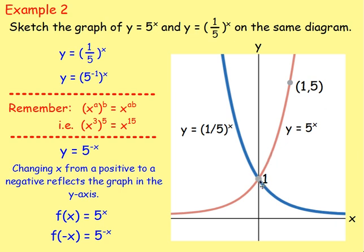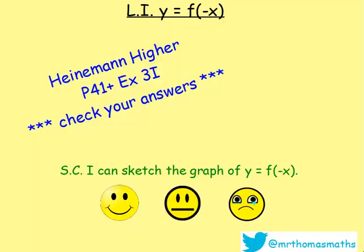Thinking about the points: the point (0, 1), if you reflect that over, it's just going to be (0, 1) — the x value of 0 stays as 0. The point (1, 5), if you change the x value to a negative, it would be (-1, 5). And that would be the graph of y equals one fifth to the power of x. Give these questions a shot — see how it goes in the book. Good luck.